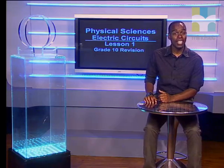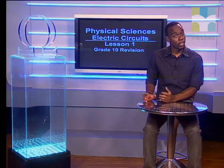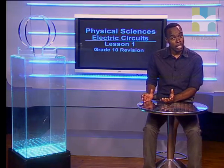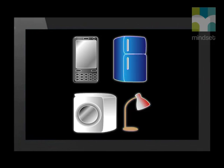Good day, Grade 11s. As you know, electricity is important in our everyday lives. Electricity provides us with light and heat energy and powers most of the conveniences of everyday life, from washing machines to cell phones. We are going to look at basic electric circuits so that we can understand how these appliances work. Let's do a quick revision on what you learned last year.